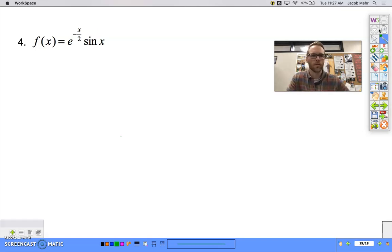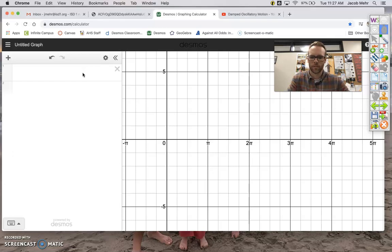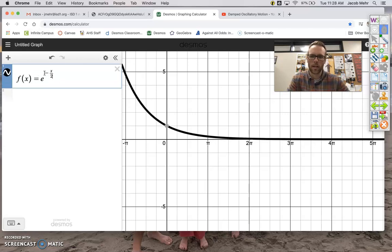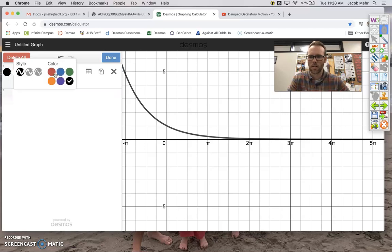Let's graph that function first. e to the negative x over 2. What made it decay? Again, the negative makes that decay. Let's not use black, let's use a nice color here. Let's go red.